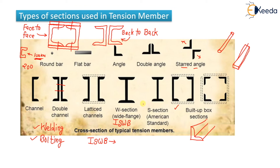We also have the W section, which is actually known as ISWB — Indian Standard Wide Flange Beam. There are various types of I-sections, channel sections, and angle sections. Then we have ISSB, which stands for Indian Standard Standard Beam. These are standard sections available under Indian standards.